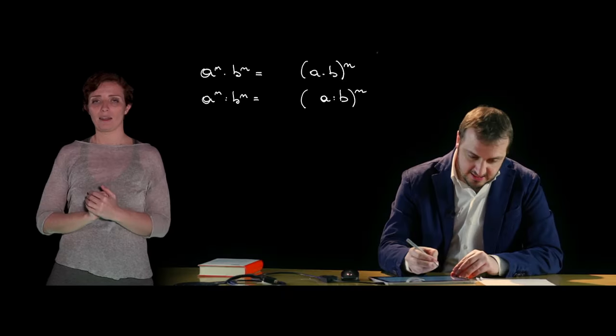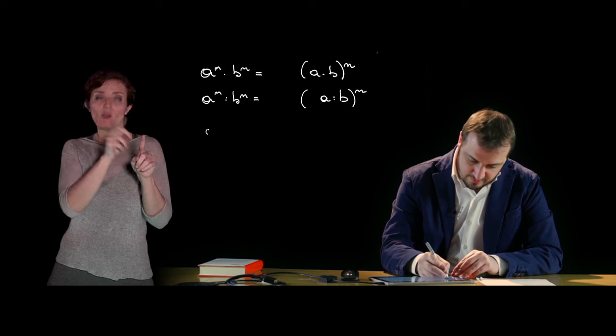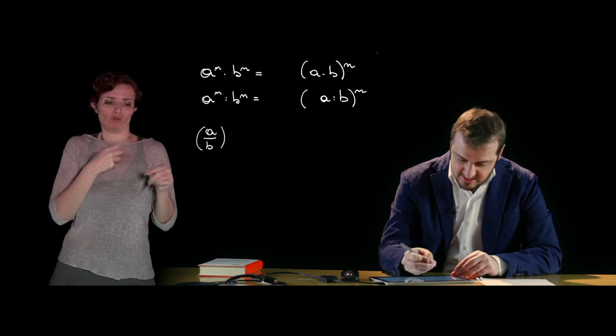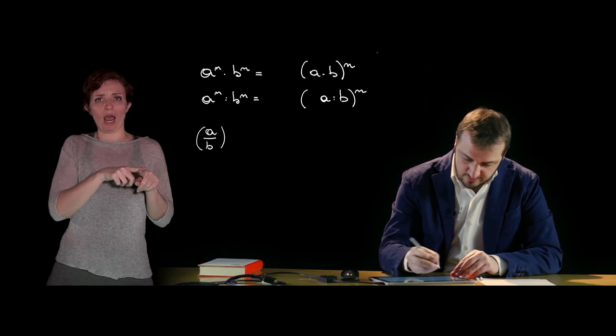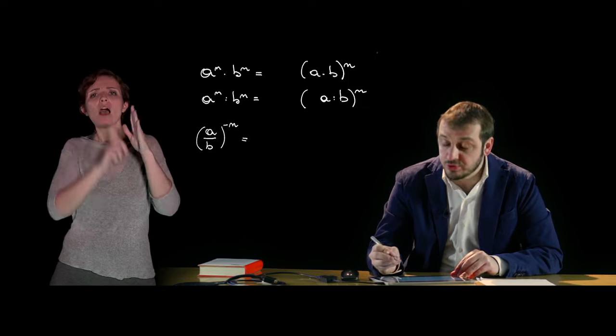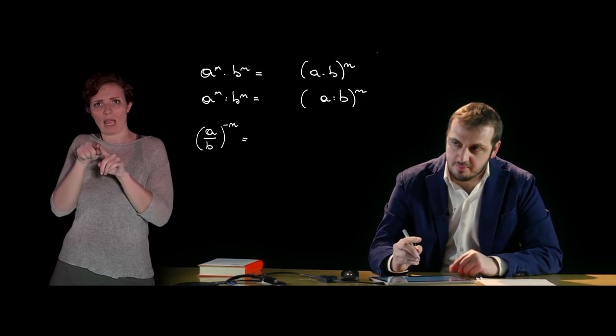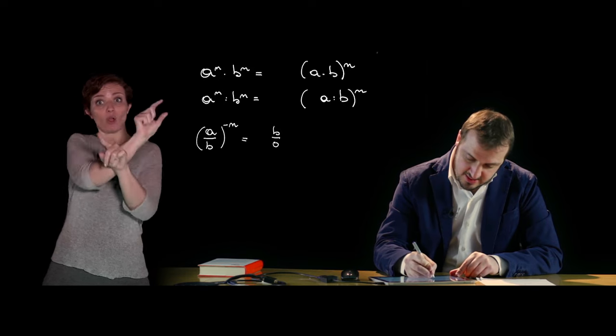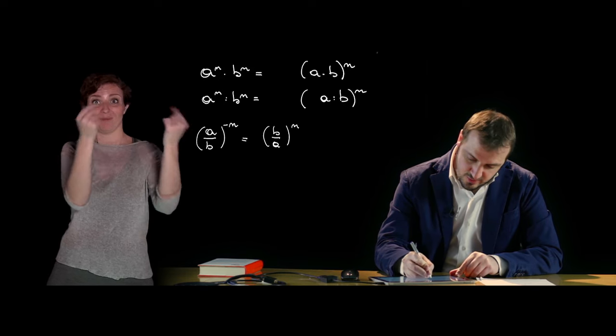Possiamo poi andare a definire altre tipologie di potenze, le potenze caratterizzate in particolare da esponenti negativi o esponenti razionali. Le potenze caratterizzate da esponente negativo: immaginiamoci una potenza caratterizzata da una base razionale, diversa da zero, con un esponente negativo. Il risultato è una potenza che ha per base il reciproco della base e per esponente l'opposto dell'esponente, e quindi una potenza di questo tipo.